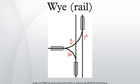Ys can also be used for turning railway equipment. By performing the railway equivalent of a three-point turn, the direction of a locomotive or railway vehicle can be swapped around, leaving it facing in the direction from which it came.